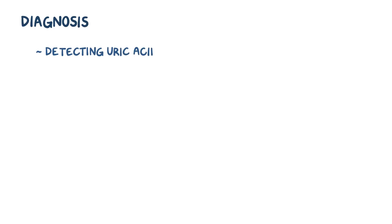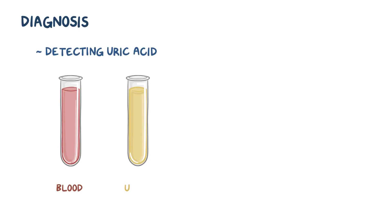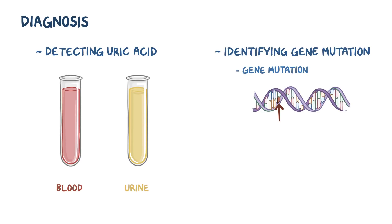The diagnosis usually begins with detecting increased uric acid levels in the blood and urine, and is confirmed by identifying a gene mutation and a decrease in the activity of the enzyme HGPRT.